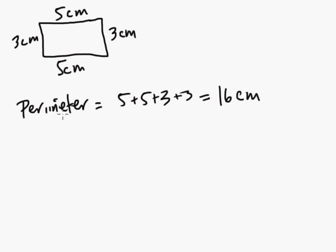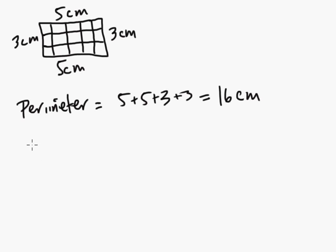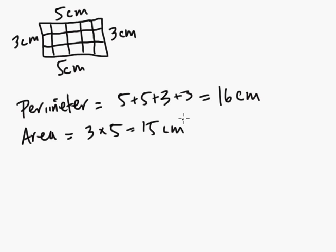Now, where does area come from? Area talks about what you have inside. Like, if you ever want to find the surface area of a room that you're painting, this comes in handy. Area is — if you were to count these boxes, there are 15 of them. The shortcut is base times height, so it's 3 times 5 equals 15 centimeters squared.